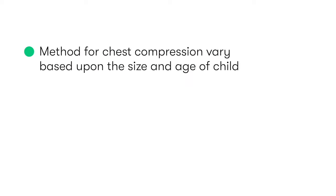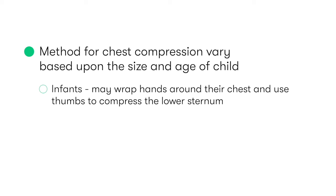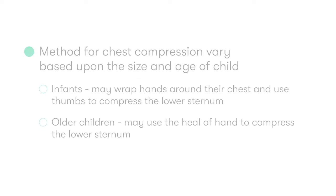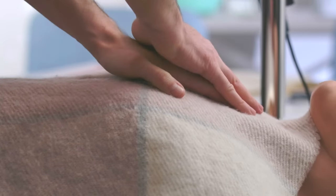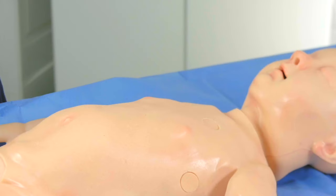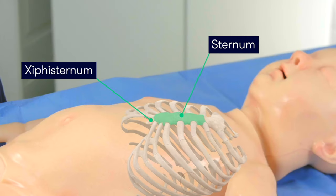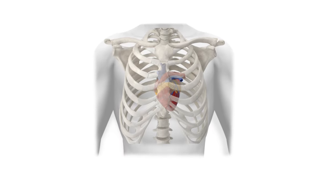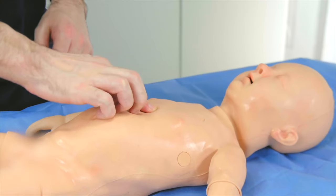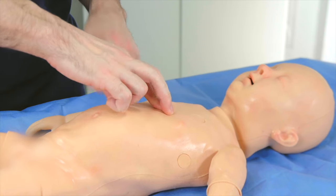The best method for chest compressions will vary based upon the size and age of the child. With infants, we may be able to wrap our hands around their chest and use our thumbs to compress the lower sternum. In older children we may use the heel of our hand, or in larger children we may actually use both hands as we would in an adult. In this case, we will use our index and middle finger to compress the sternum. Whichever technique is chosen, it's important that we compress the lower half of the sternum, by first locating the xiphisternum, which is where the lowest anterior ribs meet the sternum, and then compressing one centimeter — or one finger's breadth — above this point.